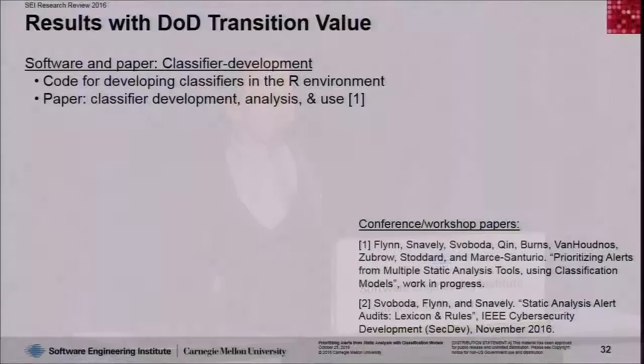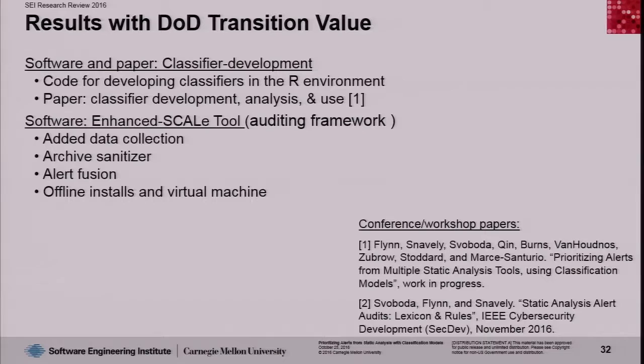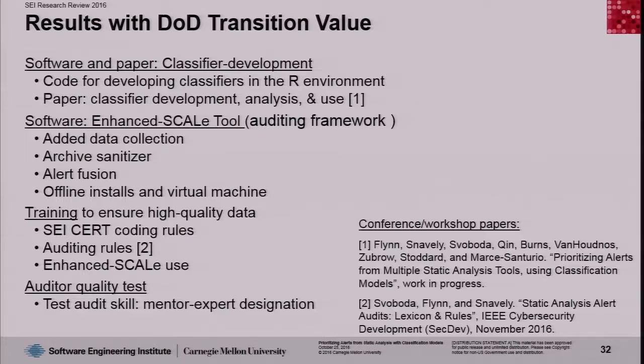Results with DOD transition value include software and a paper on classifier development, code for developing classifiers in the R environment, and a paper in progress on classifier development analysis and use. Another paper from this project was accepted to IEEE SecDev this November, on a standard lexicon and rules for static analysis alert auditing. Additional software includes the Enhanced Scale Tool — an auditing framework based on the CERT Scale Tool — with added data collection, archive sanitizer, alert fusion, offline installs in a virtual machine, and training to assure high-quality data, including training on CERT coding rules, auditing rules, Enhanced Scale use, and an auditor quality test.